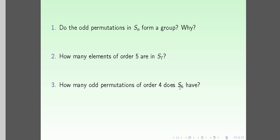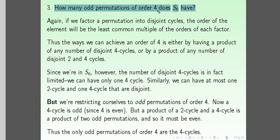Last question: how many odd permutations of order 4 does S6 have? Using the same idea, the order of a permutation is the LCM of the orders of its disjoint cycle factors. To achieve order 4, we can have a single 4-cycle, or a product of disjoint 2-cycles and 4-cycles, since LCM(2,4) = 4.